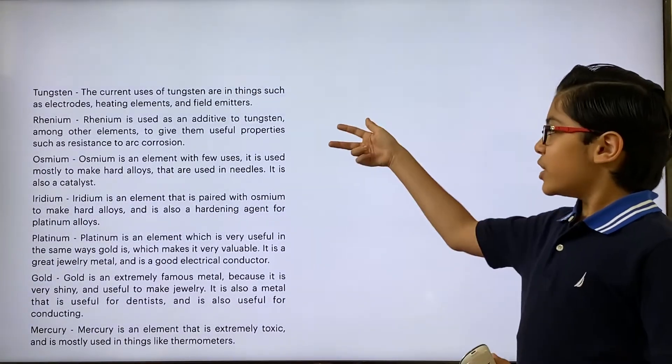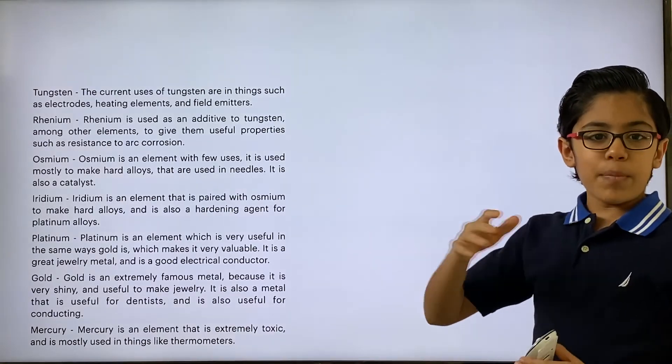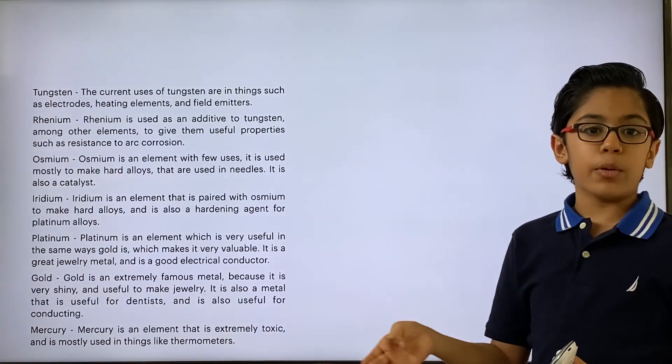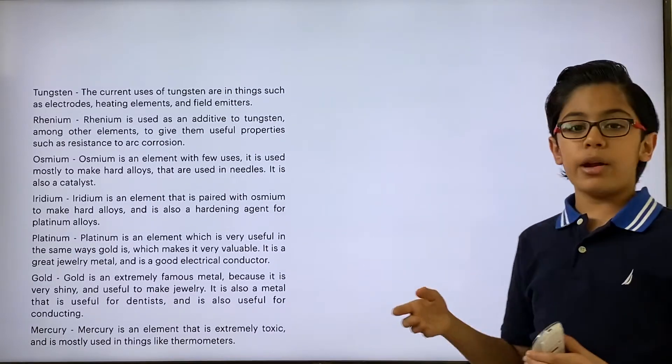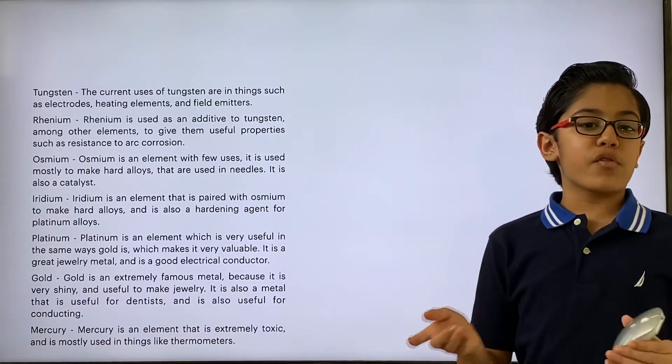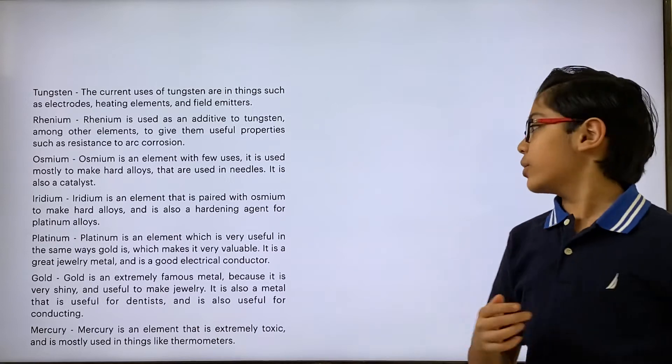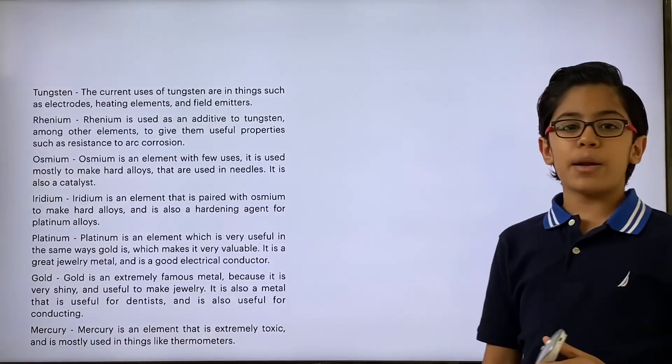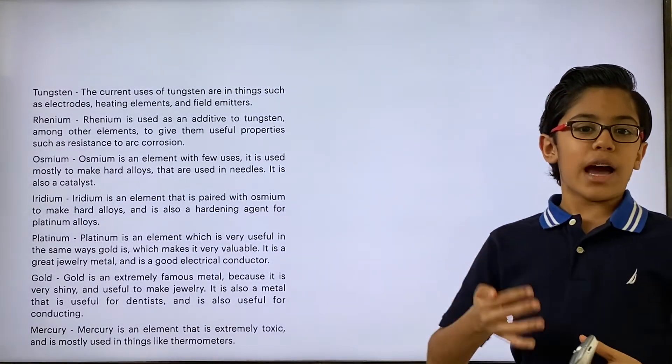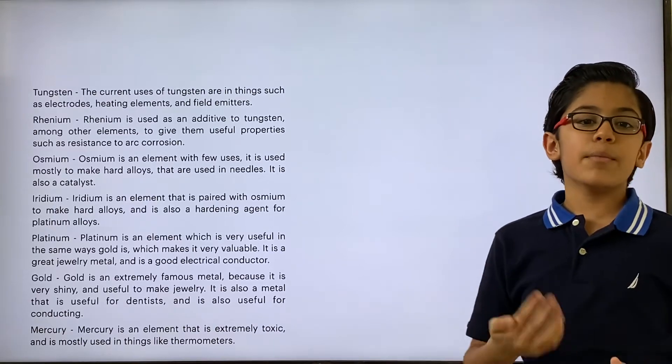You can see there's a pattern right now. You have tungsten and rhenium, both one after the other in the periodic table, and they both meld together. You have osmium and iridium, which are both one after the other in the periodic table, and they both meld together. Next, you'll have iridium and platinum that are both after each other in the periodic table, and they meld with each other.